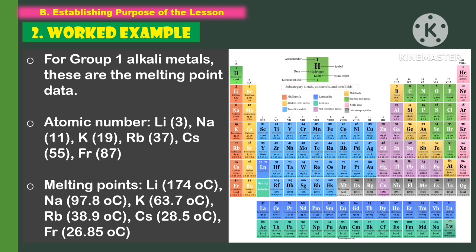For group number 1, the alkali metals, these are the melting points. When it comes to the atomic number: lithium has 3, sodium has 11, potassium has 19, rubidium has 37, cesium has 55, and francium has 87.